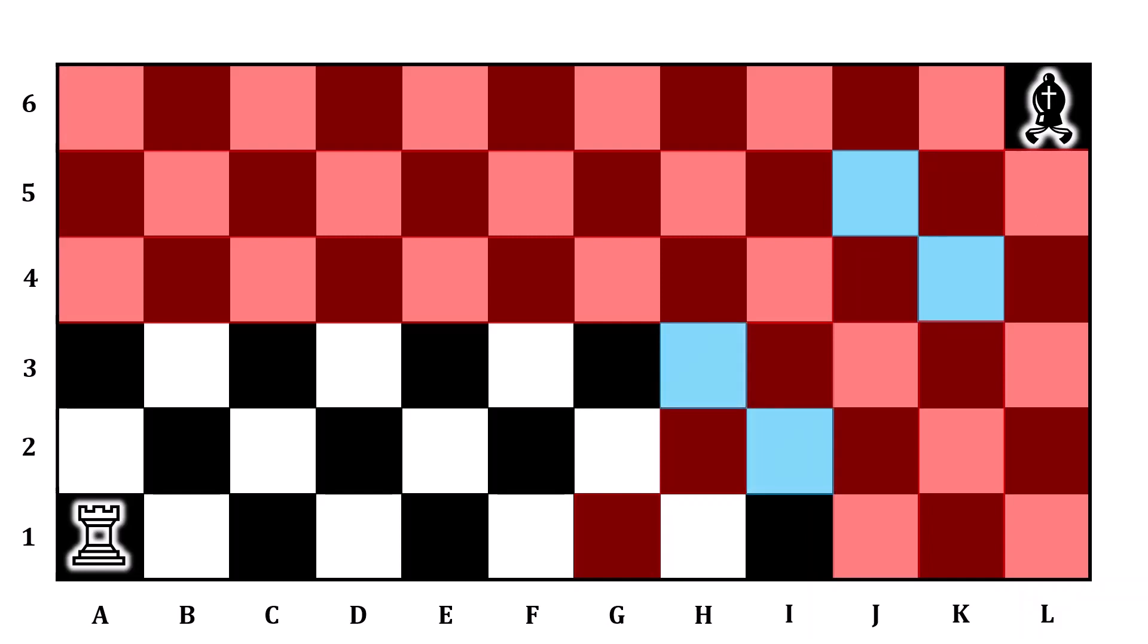Think about H3 and I2. Every move your opponent has available from those squares are ultimately losing options. Every single one of those squares is painted red. As a result, if you land on H3 or I2, you will win.